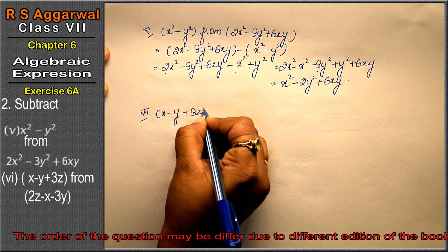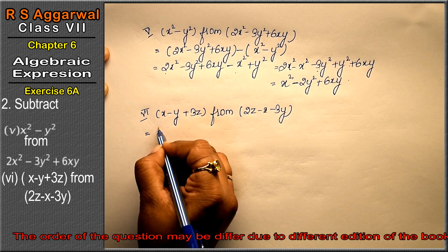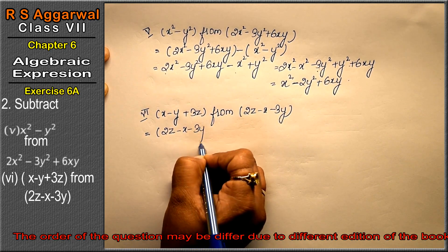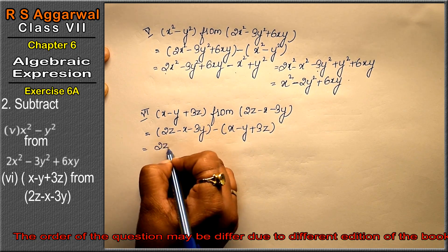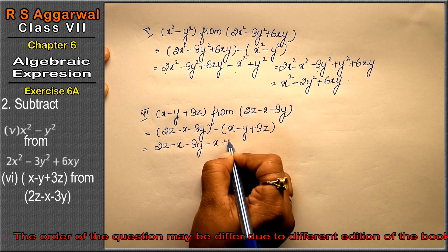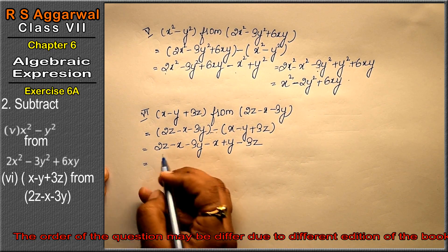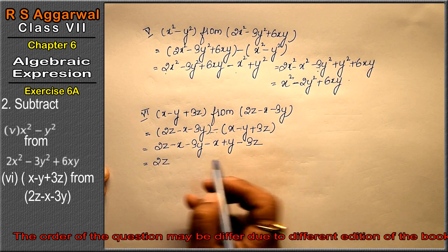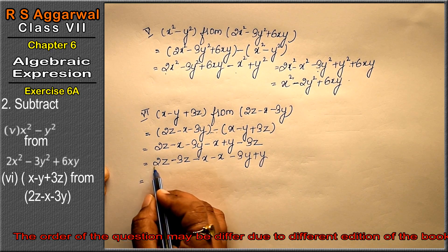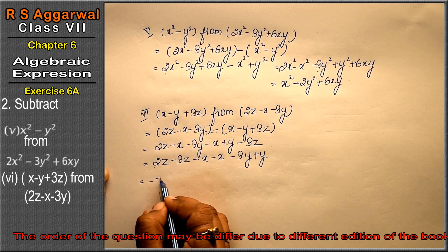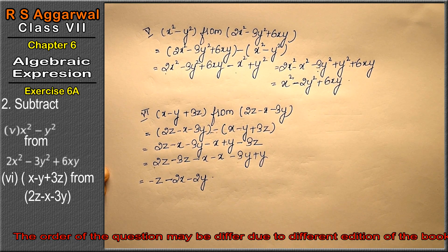Let's do the last part. Subtract (x - y + 3z) from (2z - x - 3y). The digit after 'from' is 2z - x - 3y written first, then subtract the bracket. Opening: 2z - x - 3y minus x plus y minus 3z. Collecting z terms: 2z - 3z = -z; x terms: -x - x = -2x; y terms: -3y + y = -2y. Answer is -z - 2x - 2y.